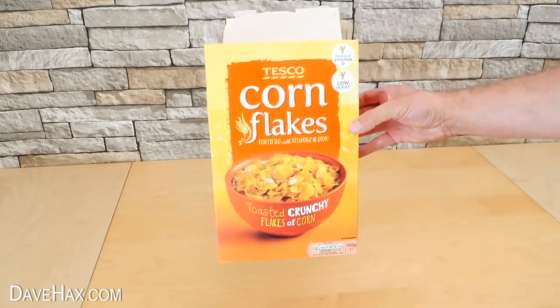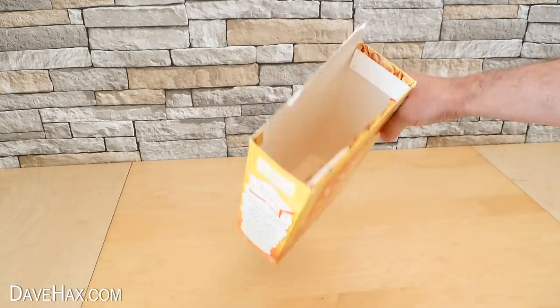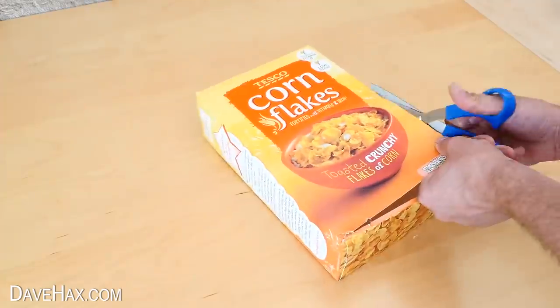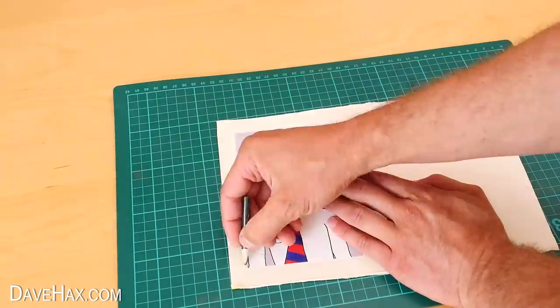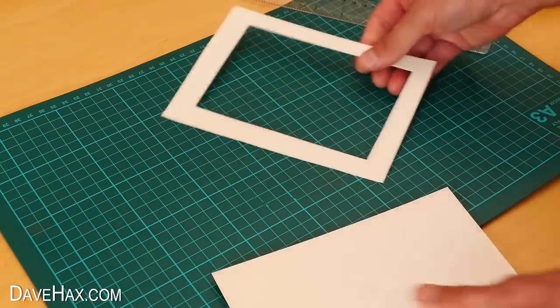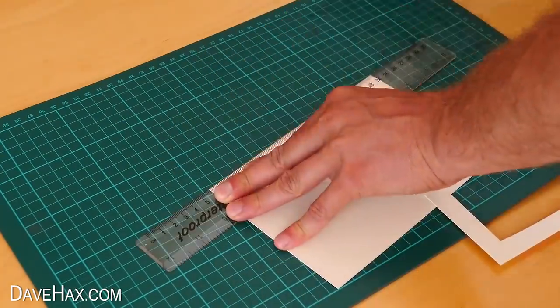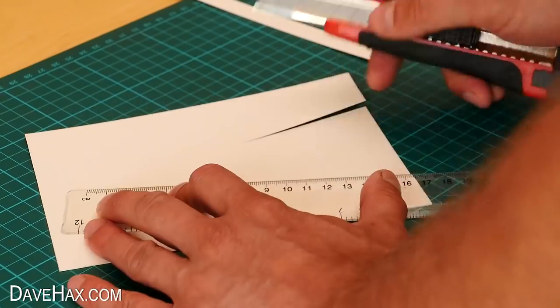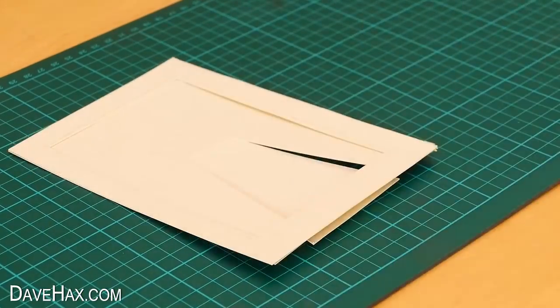If you haven't got a frame, you can try making your own out of cardboard. I cut off one side of this cereal packet, drew around the photo, cut out a hole slightly smaller, cut out a matching back piece, made some slices for a stand, then taped it together.